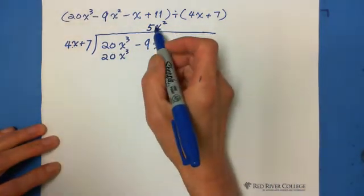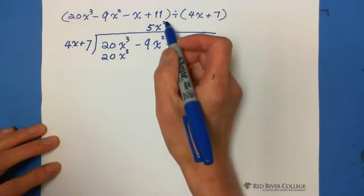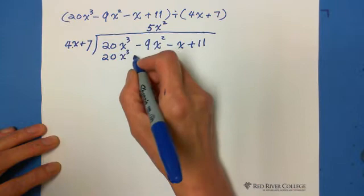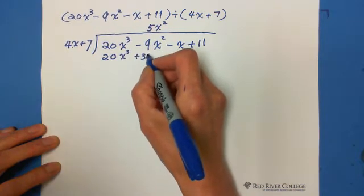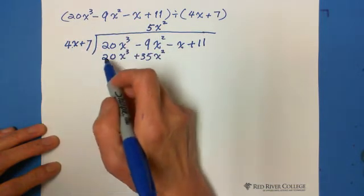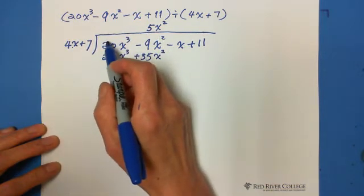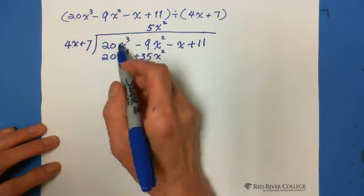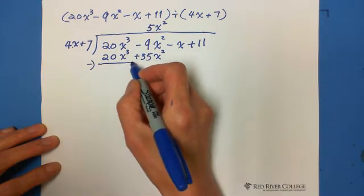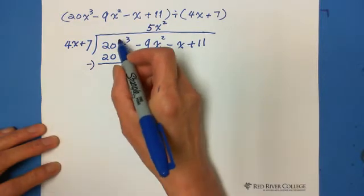And the second one, 5x squared, then multiply by 7 equals plus 35x squared. Because you're always matching the first one. So that every step, the first term will be cancelled out.